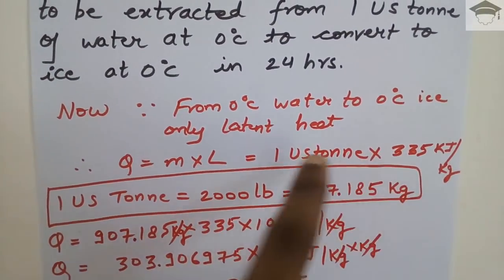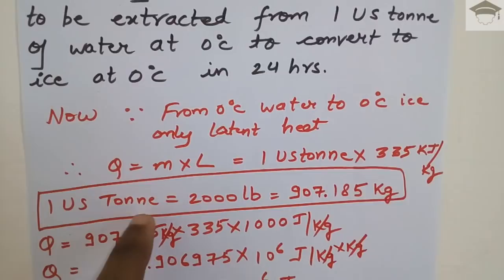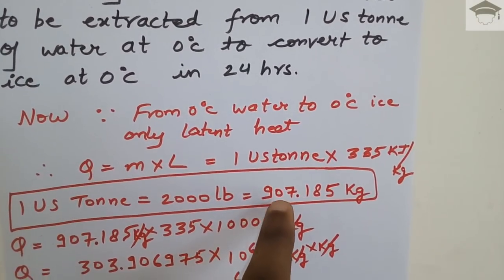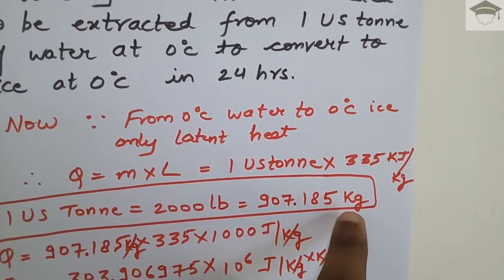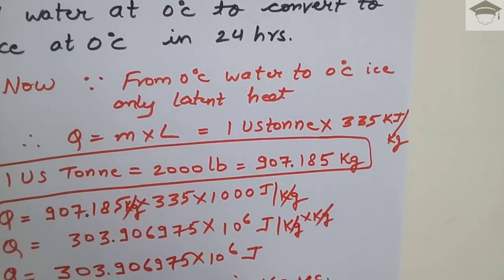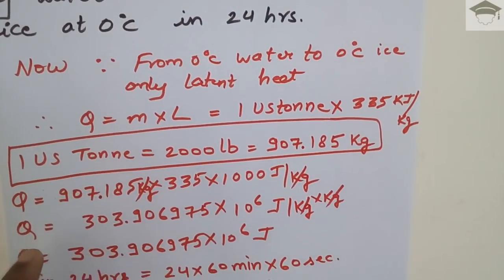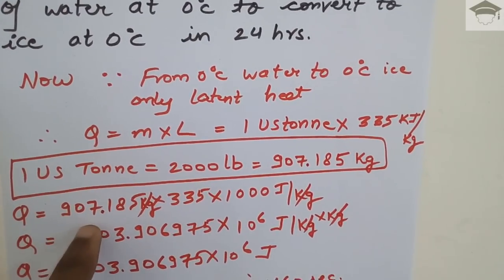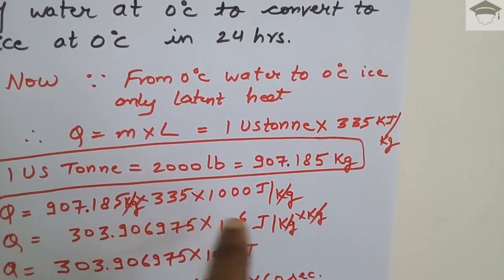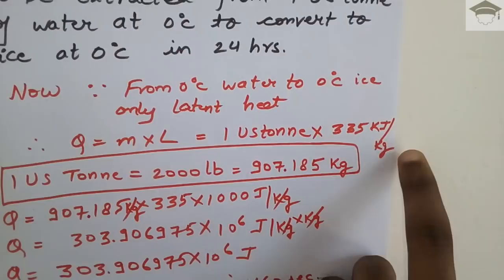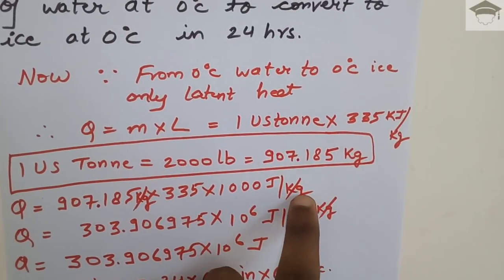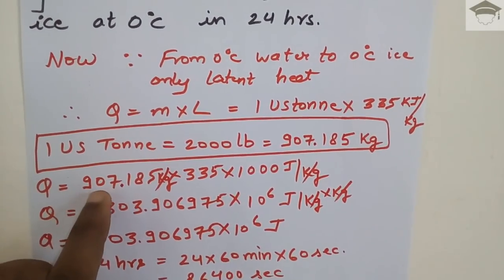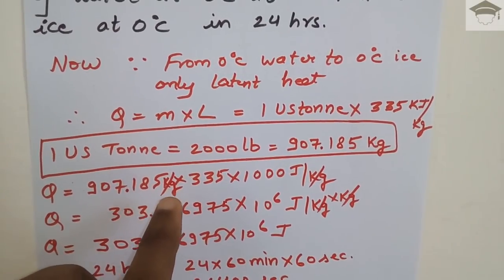The important conversion here is: 1 US ton equals 2000 pounds, which equals 907.185 kg. So Q = 907.185 kg × 335 kJ/kg. Since the units are kilojoules per kg, the kg cancels out.